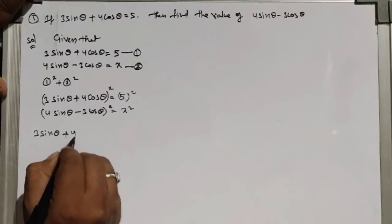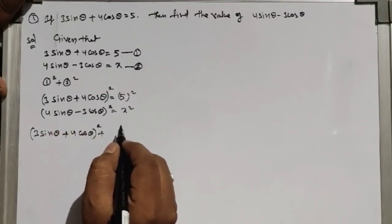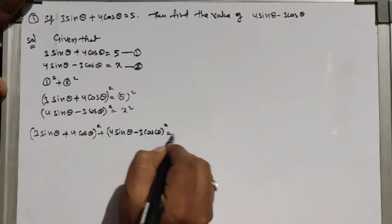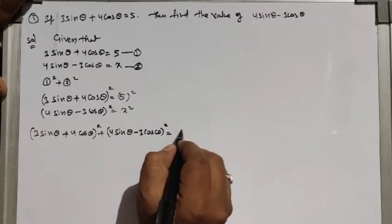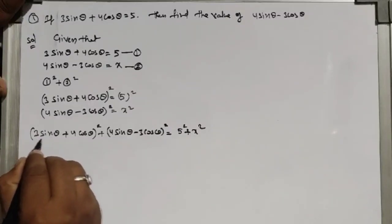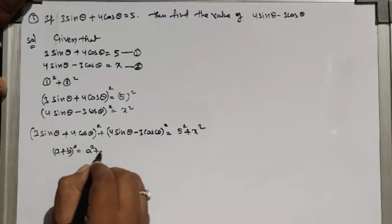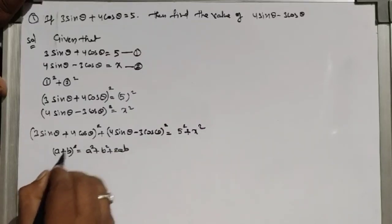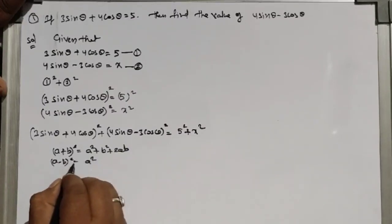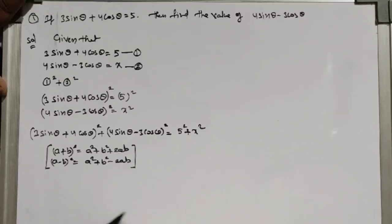Adding both equations: (3sinθ + 4cosθ)² + (4sinθ - 3cosθ)² = 5² + x². The first term is of the form (a + b)², where a² + b² + 2ab, and the second term is of the form (a - b)², where a² + b² - 2ab. We now expand both terms using these identities.